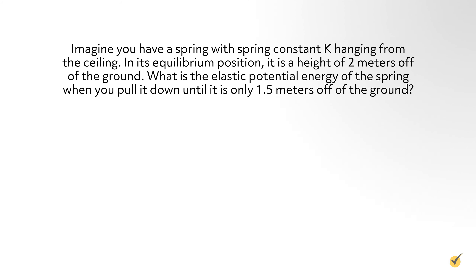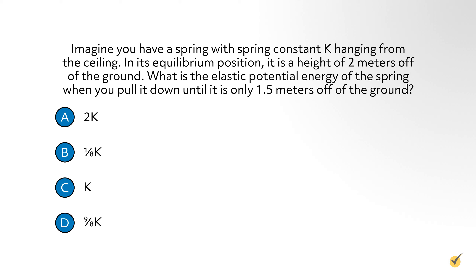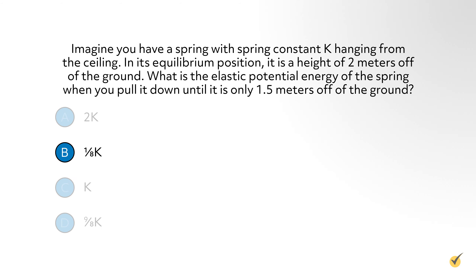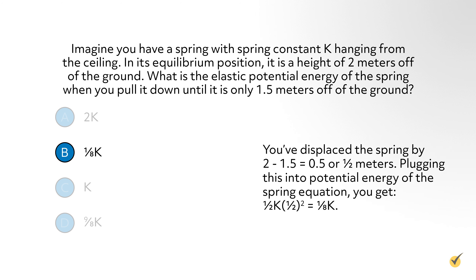Imagine you have a spring with spring constant k hanging from the ceiling. In its equilibrium position, it is a height of 2 meters off of the ground. What is the elastic potential energy of the spring when you pull it down until it is only 1.5 meters off the ground? The correct answer is b: one-eighth k. You've displaced the spring by 2 minus 1.5 equals 0.5, or one-half meters. Plugging this into the potential energy of the spring equation, you get one-half times k times one-half squared, which equals one-eighth k.